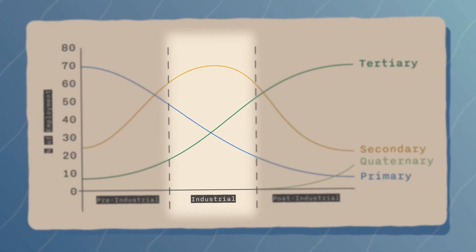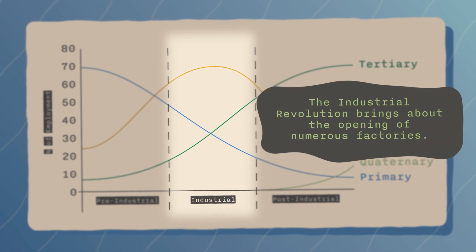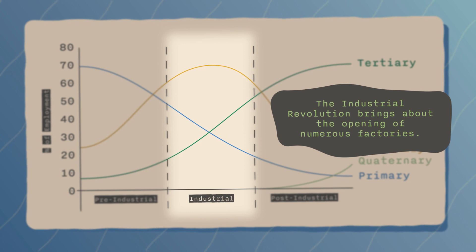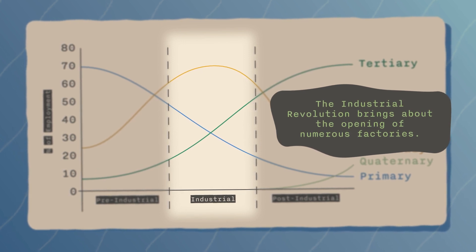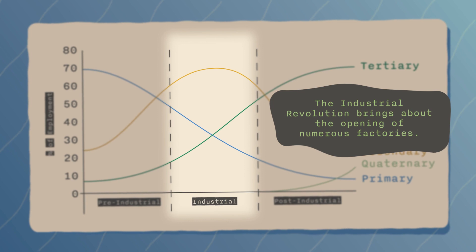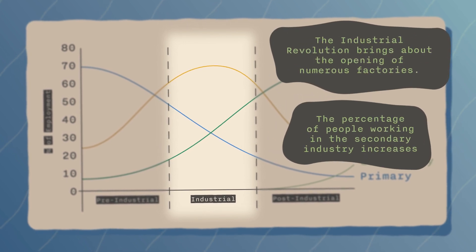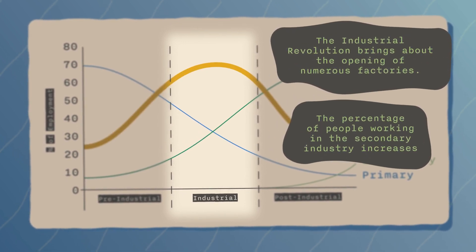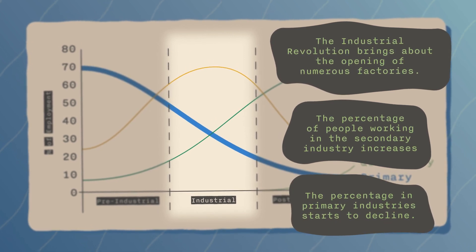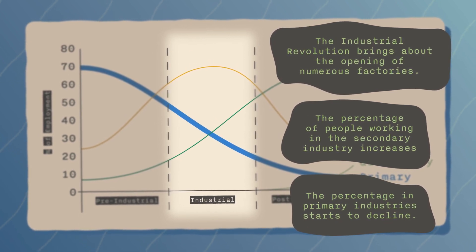Phase two: industrial phase. The industrial revolution brings about the opening of numerous factories, which attracts people from rural areas who are seeking higher wages. The percentage of people working in the secondary industry increases, while the percentage in primary industries starts to decline. The introduction of machinery on farms also contributes to a decrease in primary employment.